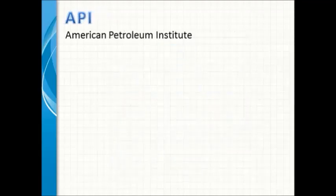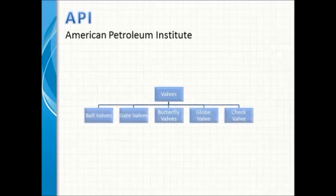The API — American Petroleum Institute — codes are mainly used for valves. There is a separate API code for each valve type: ball valves, gate valves, butterfly valves, globe valves, and check valves each have their own API standard. For example, API 608 covers ball valves and API 600 covers gate valves.